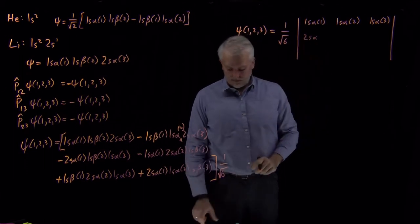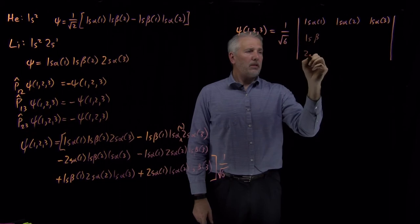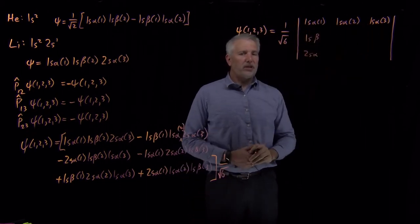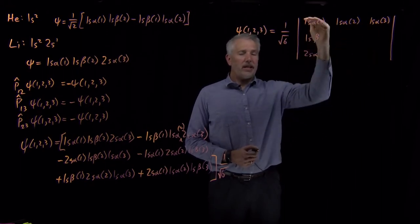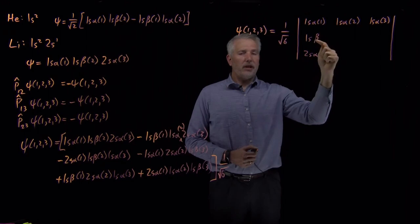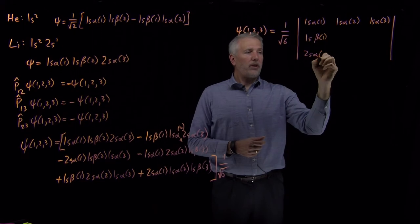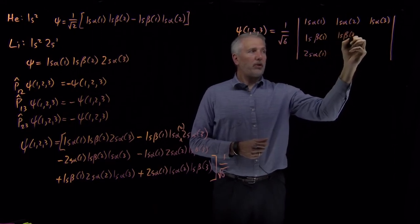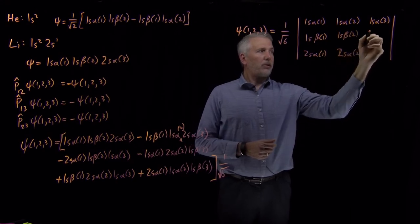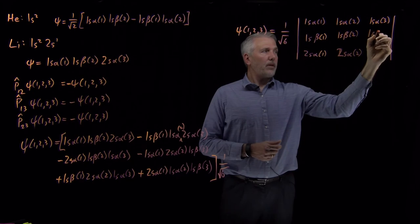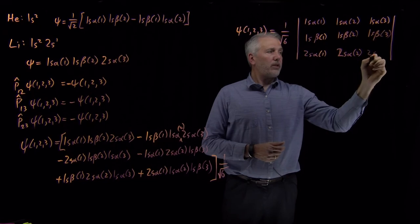Going across one of the rows in a matrix, I write the same orbital function with different electrons as the argument. Going down the columns, I write different orbitals: 1s alpha, 1s beta, 2s alpha. Column one is all for electron 1, column two all for electron 2, column three all for electron 3. So the entries are: 1s beta(3), 2s alpha(3), filling out the matrix completely.